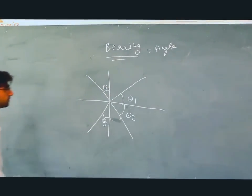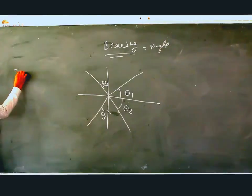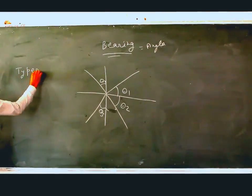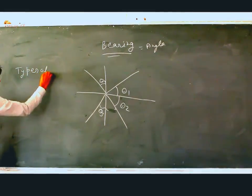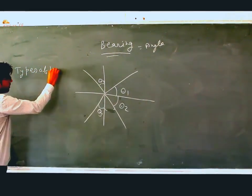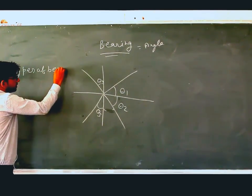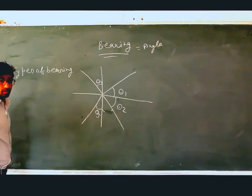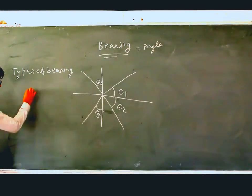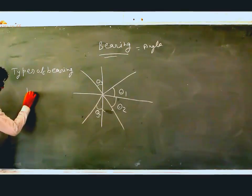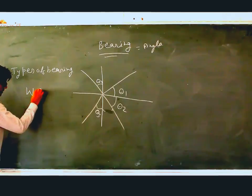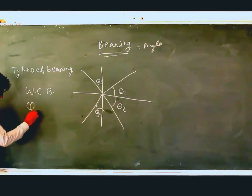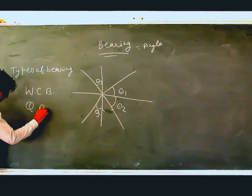Basically, bearings are of two types. Type 1: WCB, and Type 2: QB.